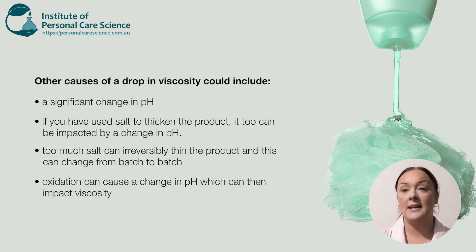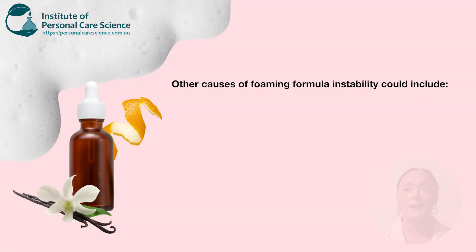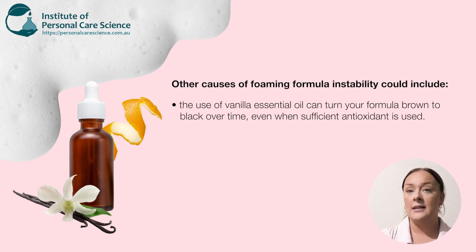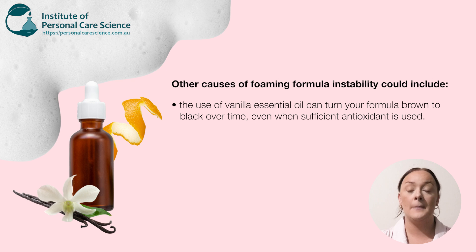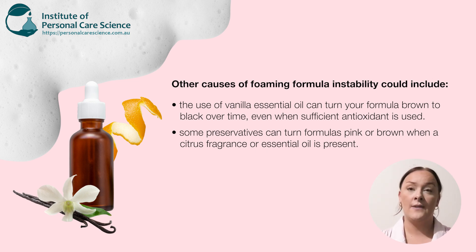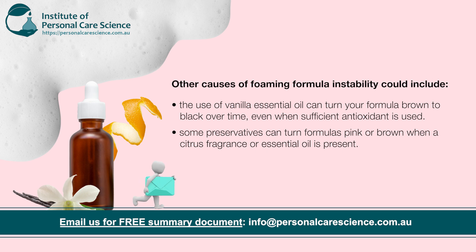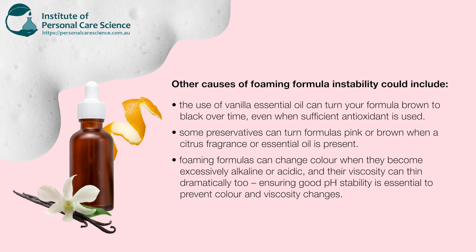These are the things you will need to investigate if there's a drop in viscosity in surfactant products. Some other causes of instability in foaming formulas include the use of vanilla essential oil, which is known to sometimes cause a product to turn brown or black over time — even when you've used the correct amount of antioxidants — meaning you may need to reduce or replace it. Citrus essential oils, commonly orange, can also affect surfactant formulas and make them irreversibly thin in viscosity. Some preservatives can turn surfactant formulas pink or brown, especially in the presence of citrus essential oils, and surfactant formulas can also change colour under excessively alkaline or acidic conditions, which can then cause viscosity to drop.